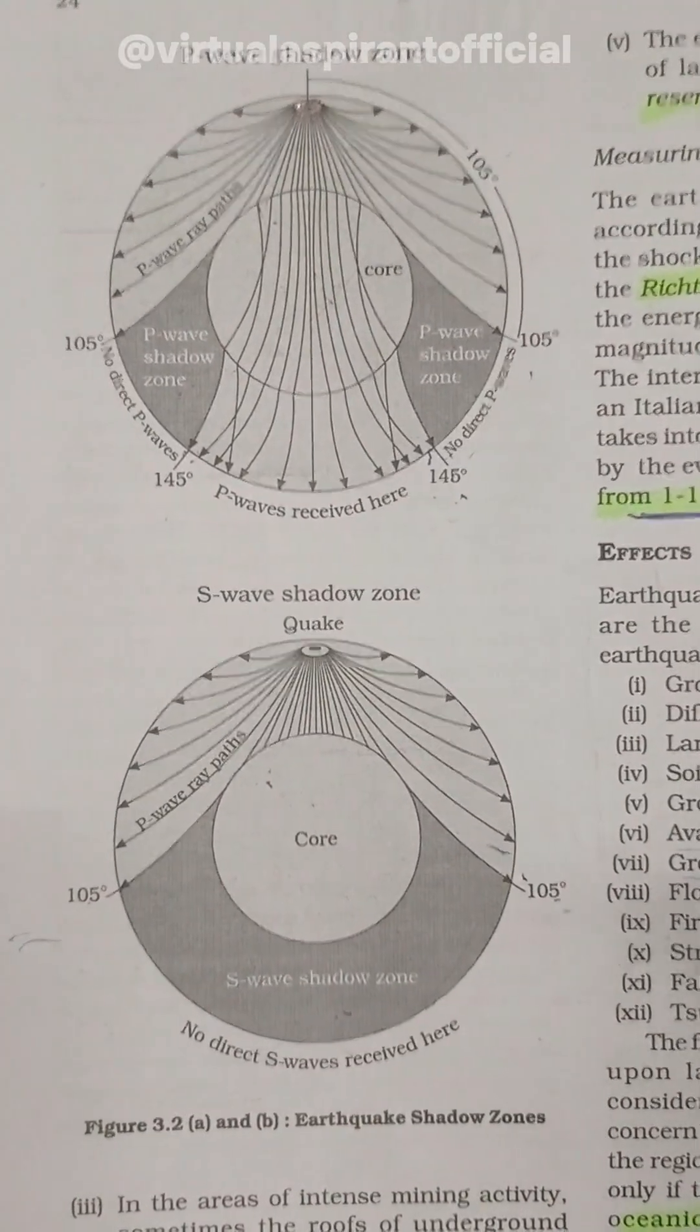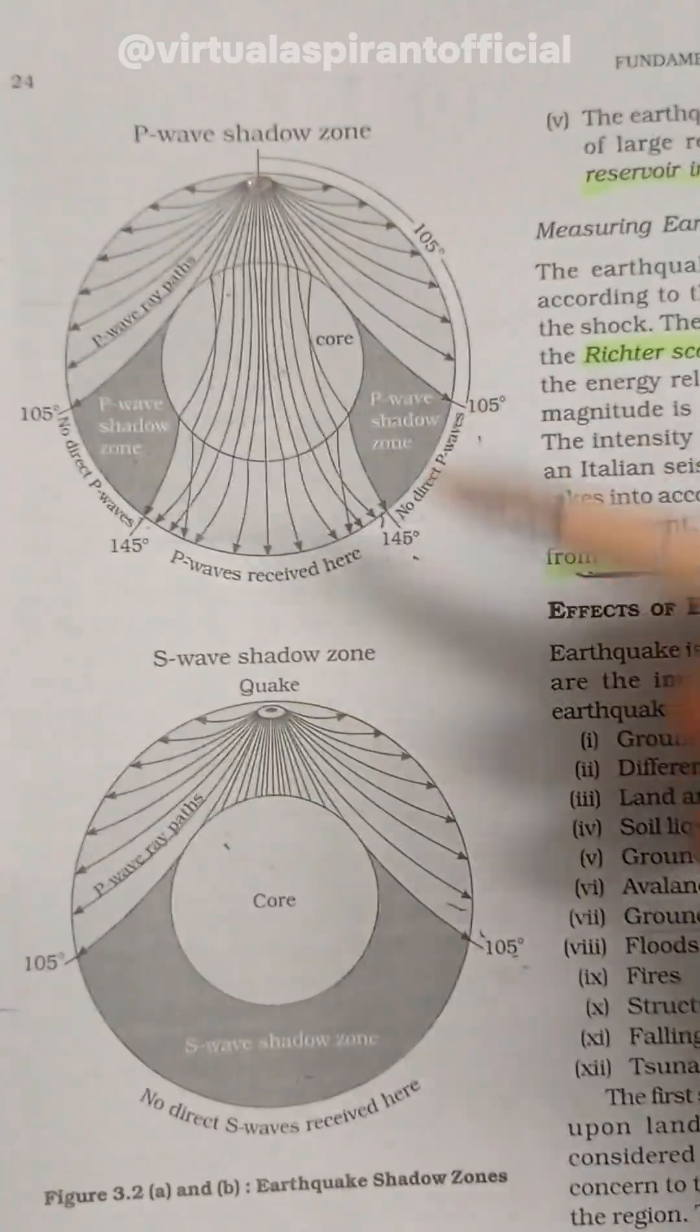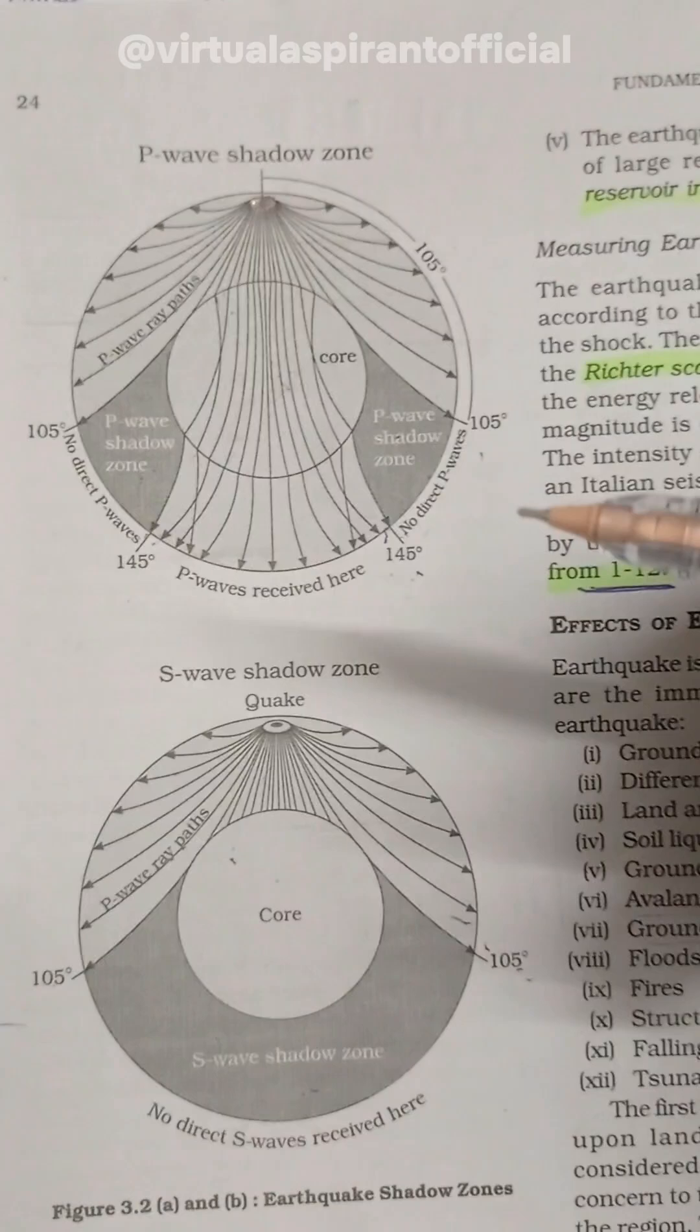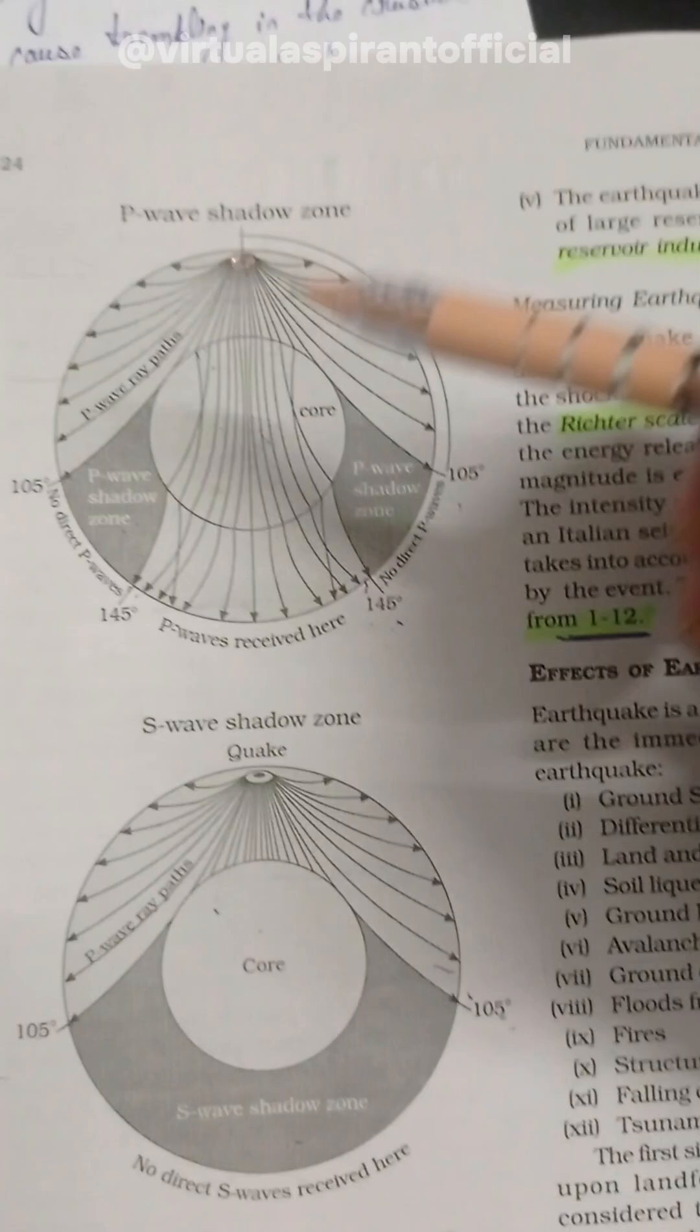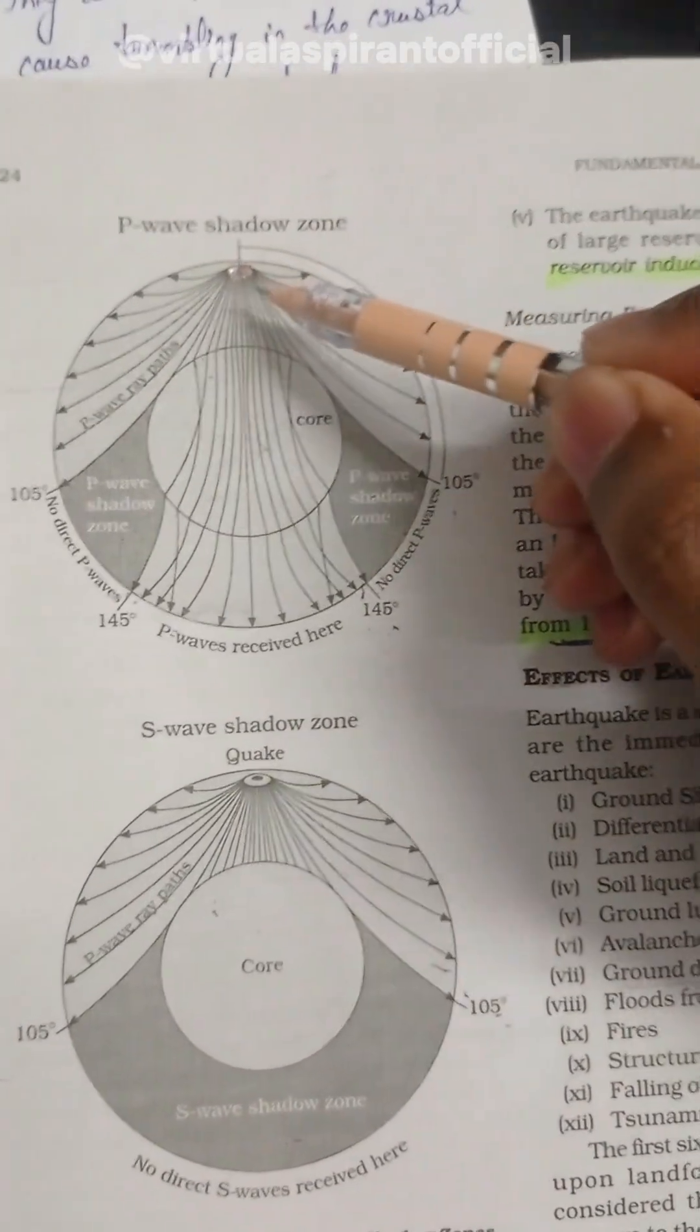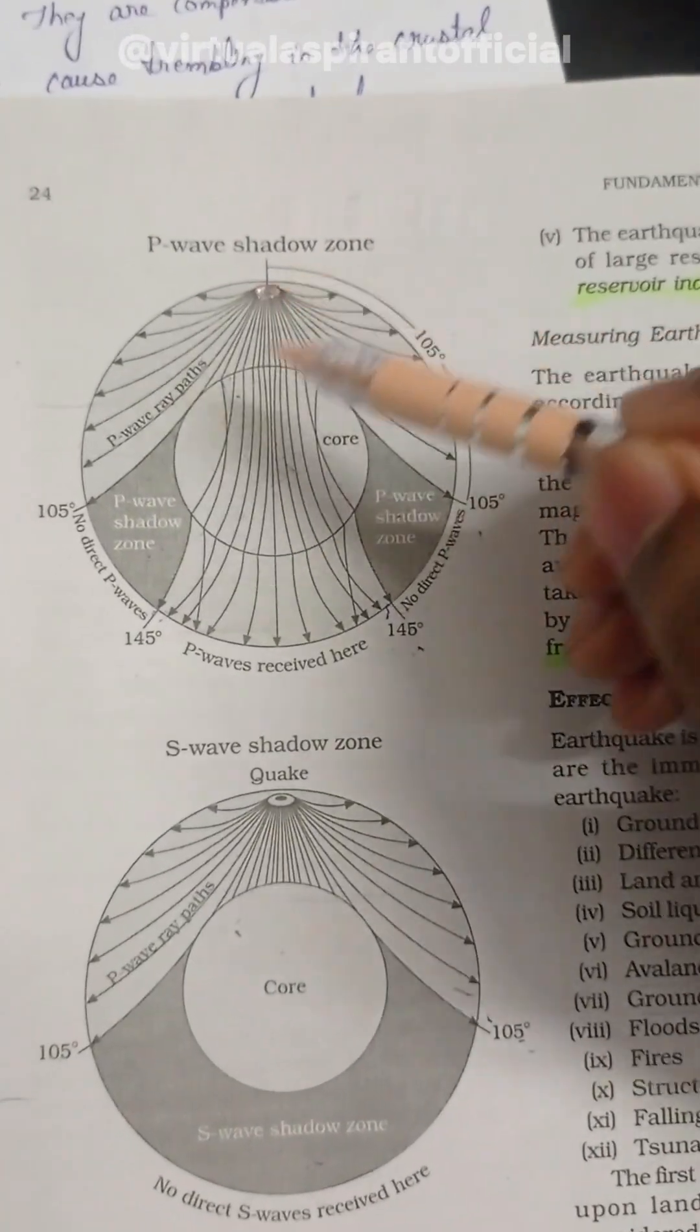Today we are going to understand a very interesting topic of geography, and that is the earthquake shadow zone. Let's understand what this diagram denotes to you. Whenever an earthquake occurs, it occurs beneath the earth's surface and that point is called the focus. So this is the focus. Whenever an earthquake occurs, there are two waves.